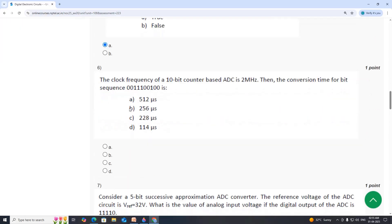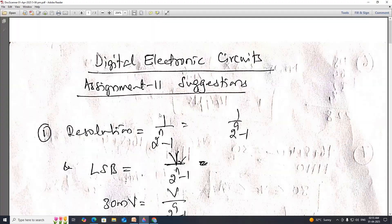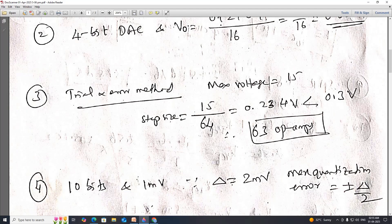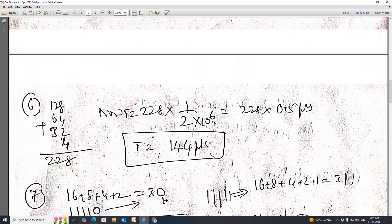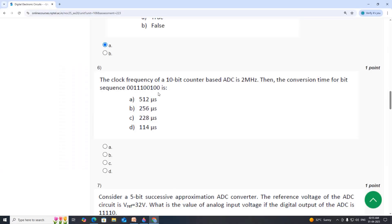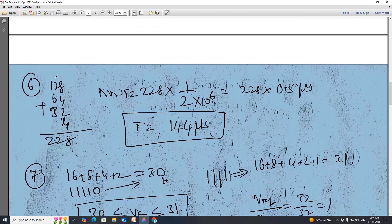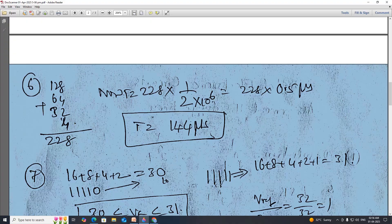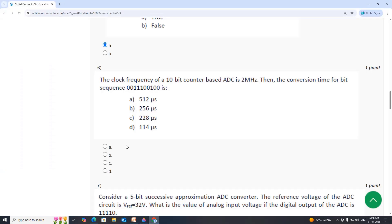Sixth question. So for this input sequence, frequency is given, 10-bit converter. So 128, 64, 32, 4, 228. So total time T equal to 228 into 1 divided by 2 MHz. So it is 0.5, that is equal to 144 microseconds. T equal to 144. Option D.